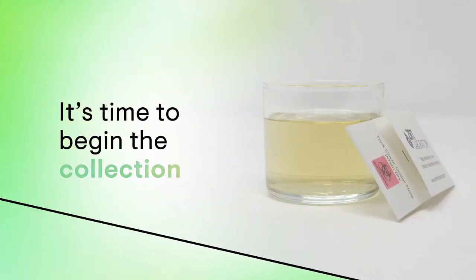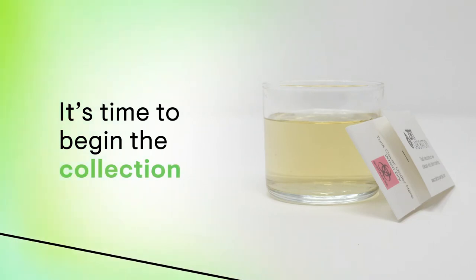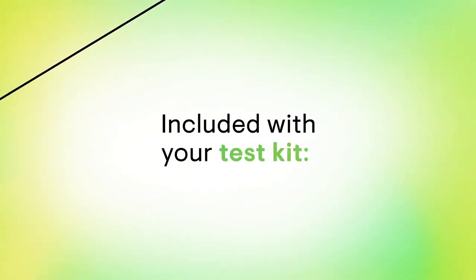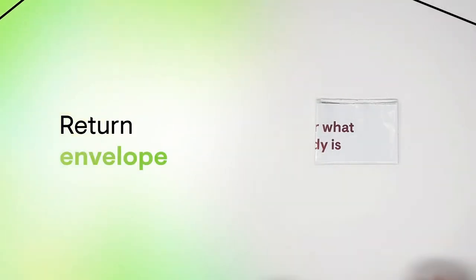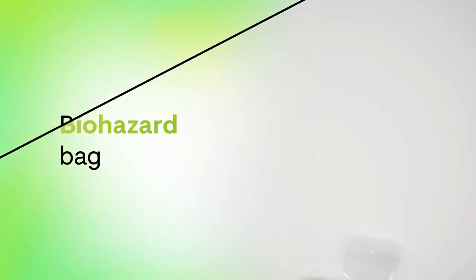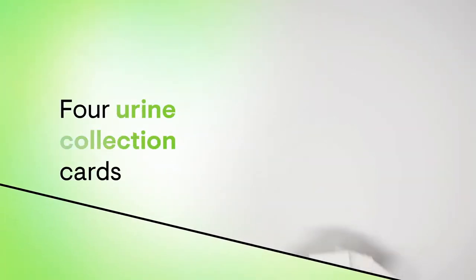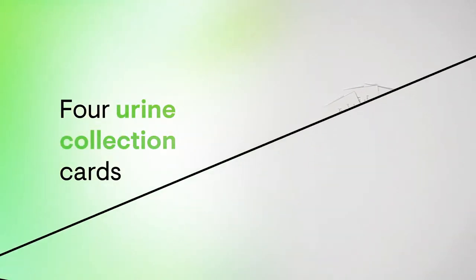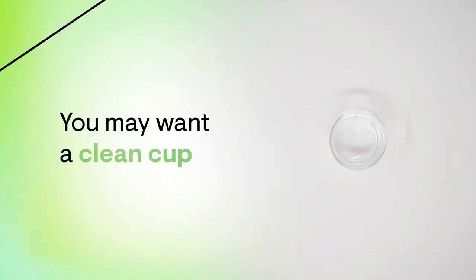After reading the instructional booklet, it's time to begin the collection process. Here are the items included with your kit: a plastic box, a return envelope, a return label, a biohazard bag, and four urine collection cards. Note that you might also want to have a clean cup handy.